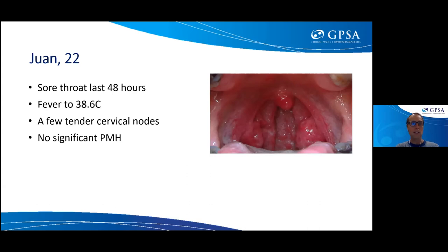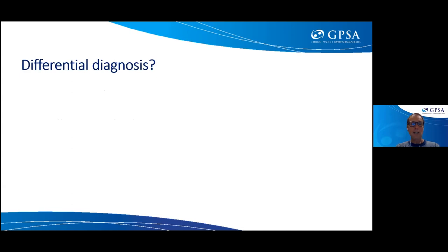Our next patient is Juan, 22 years old, with a sore throat for 48 hours, temperature 38.6, tender cervical lymph nodes, and otherwise well. His throat shows pharyngeal injection but no tonsillar exudate — just a nasty-looking red throat. Beyond viral pharyngitis and group A strep, the differential includes: EBV (infectious mononucleosis), herpes stomatitis, gonorrhoea, chlamydia, and other causes. A registrar might default to viral versus strep, but it's important to ask — what else could it be?